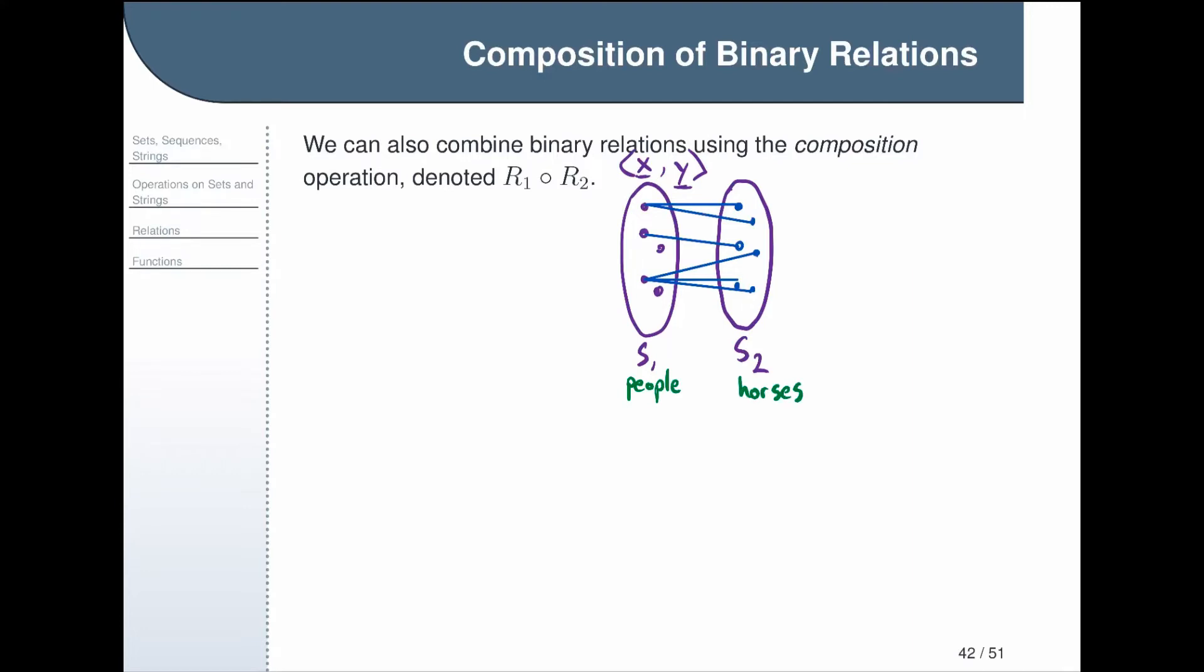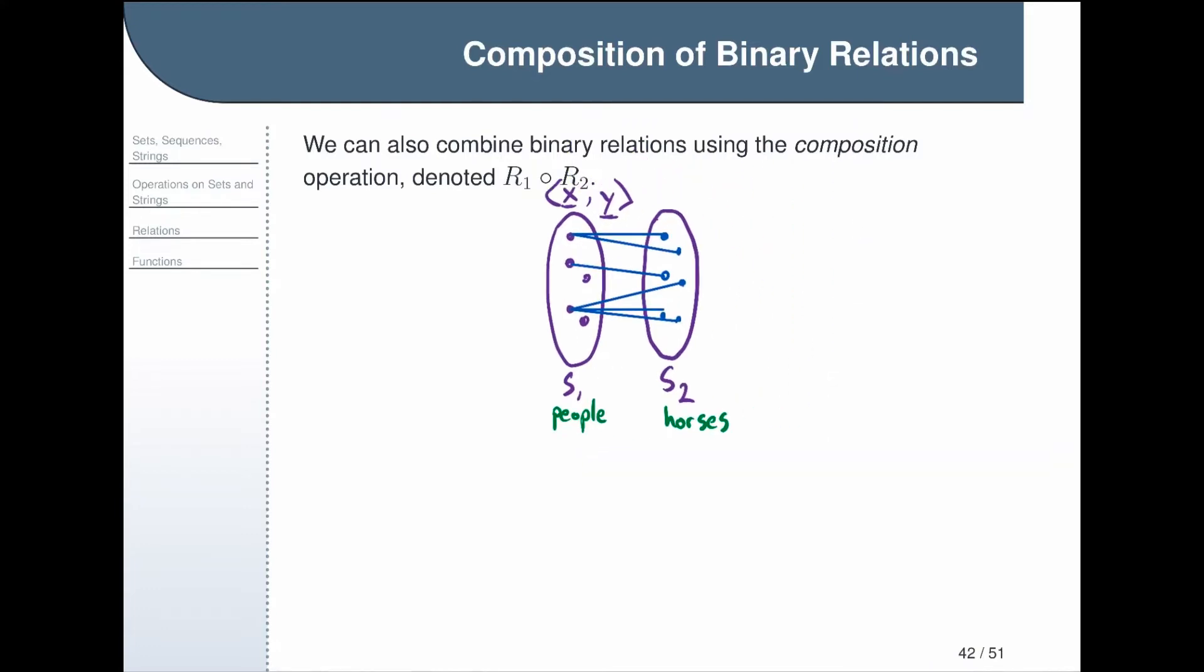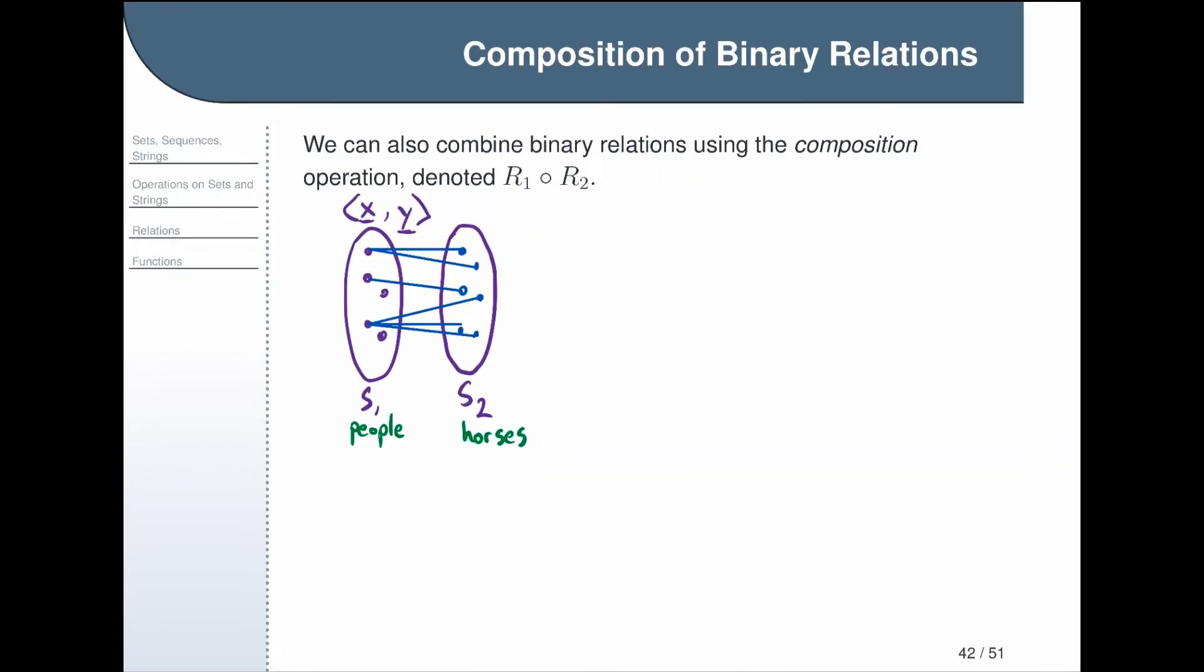That person has two horses. This person has only one horse. This person here has three horses. And then we have maybe two people with no horses at all. So that would be an example of a relation. Just to keep things straight, label this as our set of people. And this here is horses. That was R2.